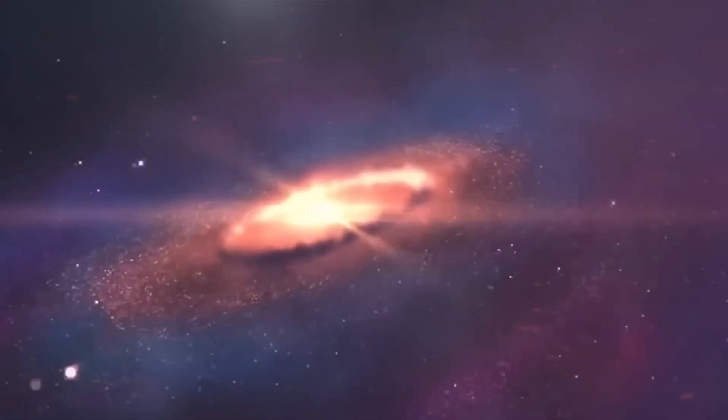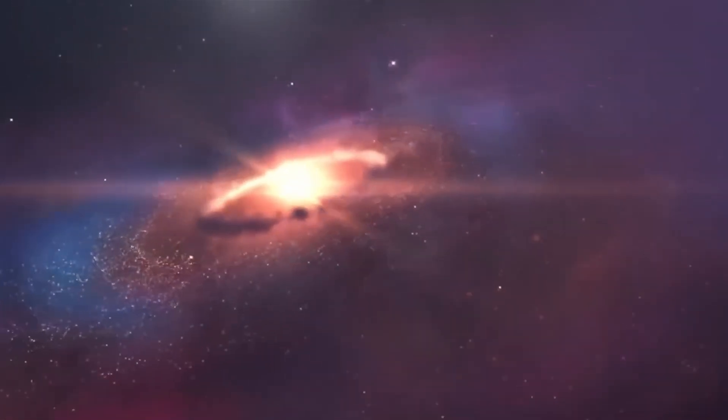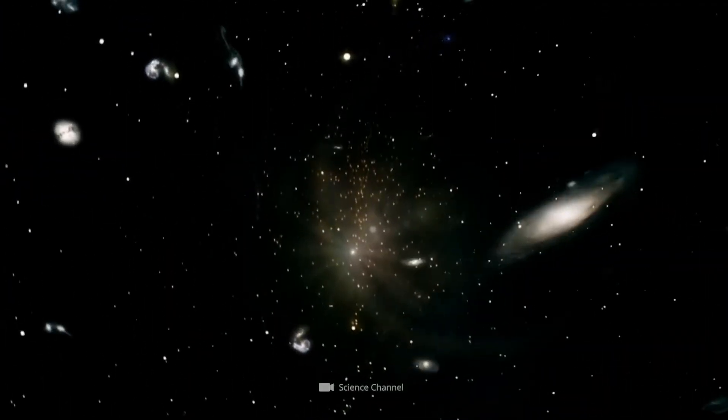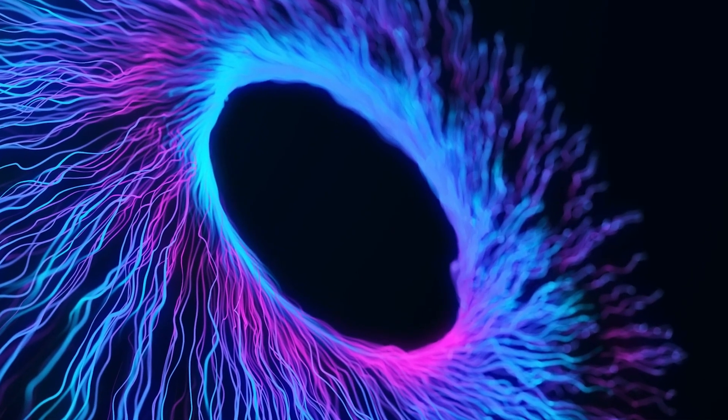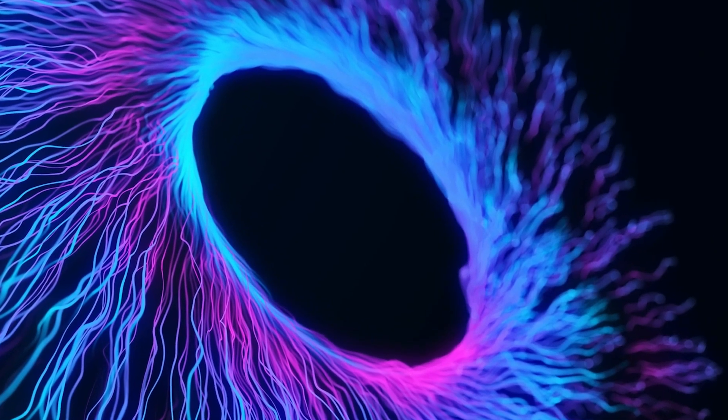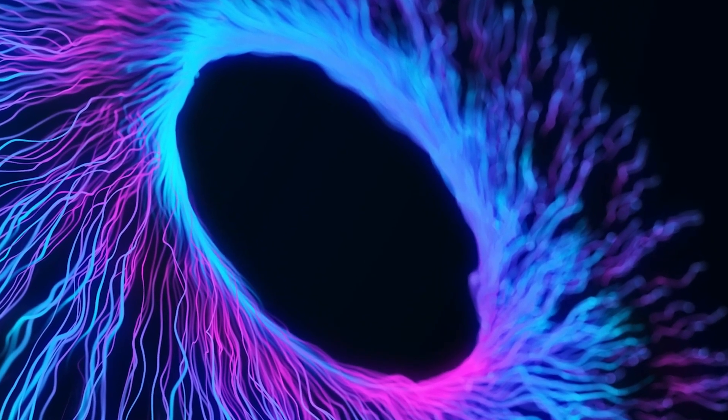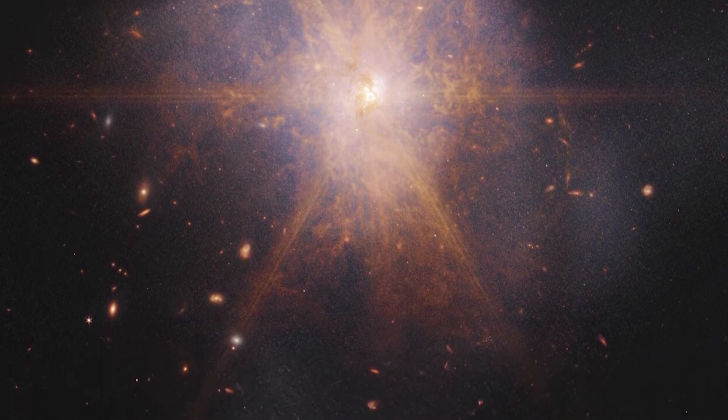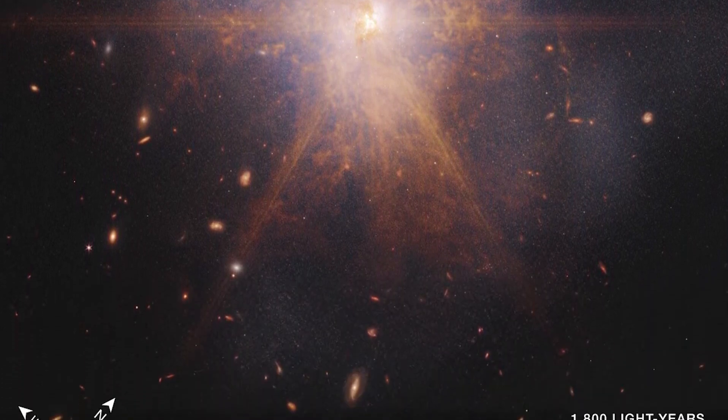New research suggests that three of the earliest objects identified as galaxies by the JWST aren't galaxies at all but rather dark stars—immense, ultra-bright hypothetical objects powered by dark matter rather than nuclear fusion. If the theory is correct, then this could finally help scientists better understand dark matter, the universe's most mysterious component.